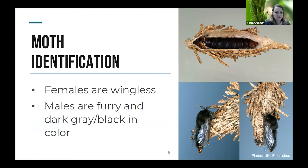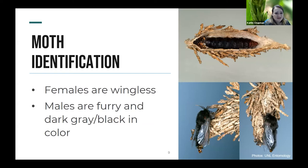Bagworms go through the same life cycle as other moths — they have caterpillars, they pupate in a cocoon using their bag, and then they become adults. This family of insects, Psychidae, is really interesting because the males and females look extremely different from each other. Female bagworms are wingless, legless, and kind of just look like a maggot. Seeing a female bagworm is really rare because you'd have to dissect open their bags — females are never going to leave that bag.